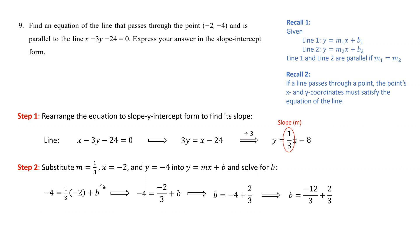And then we group the numbers and combine. In order to combine, we need to find the common denominator, which is 3. Therefore, our first term on the right-hand side will be negative 12 over 3, which is equivalent to negative 4.